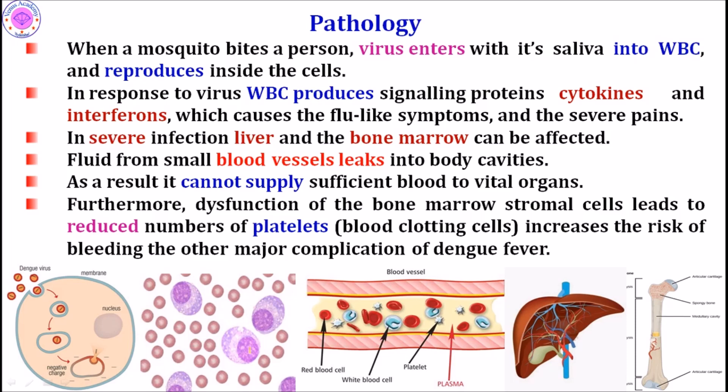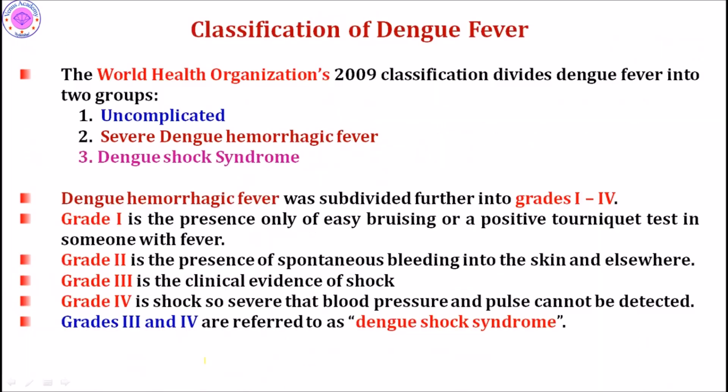The disease also affects bone marrow, where platelets are produced, leading to a decrease in platelet count. Since platelets are blood clotting cells, and blood vessel leakage is already occurring, the reduced platelet count means clotting cannot occur, leading to severe dengue shock syndrome.